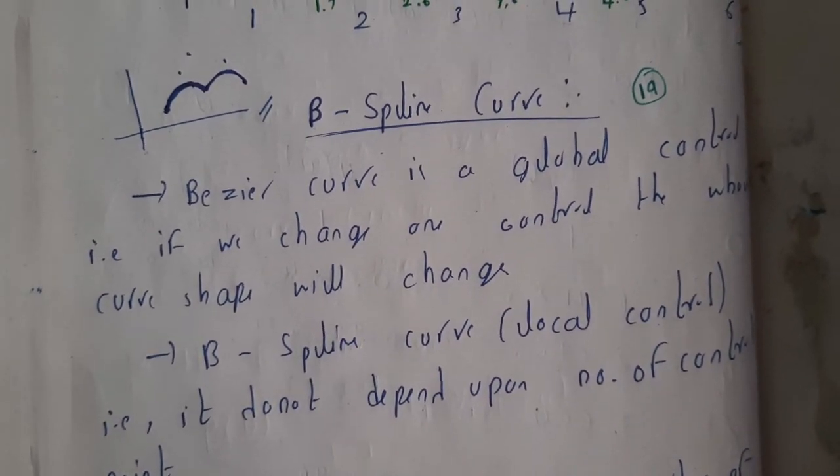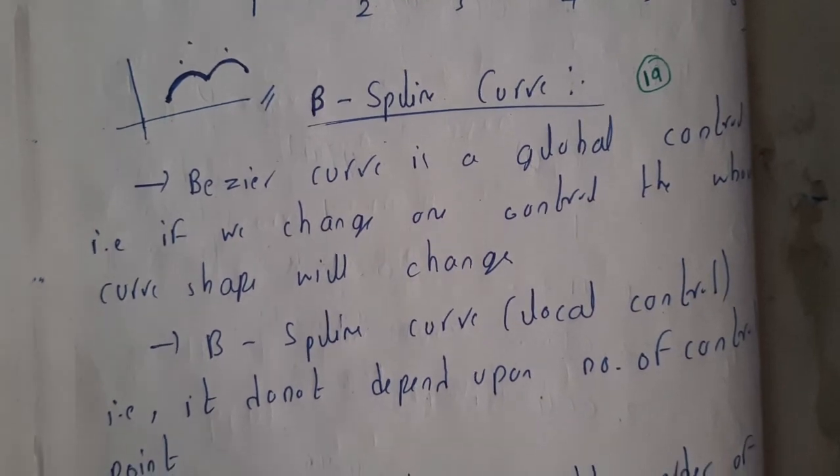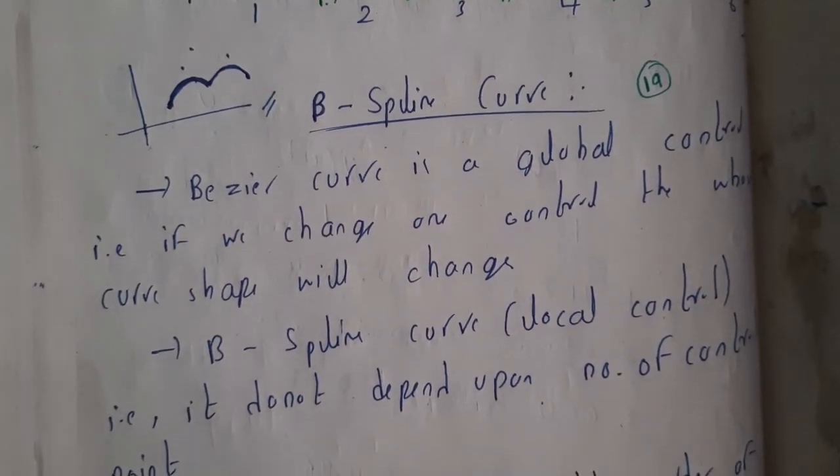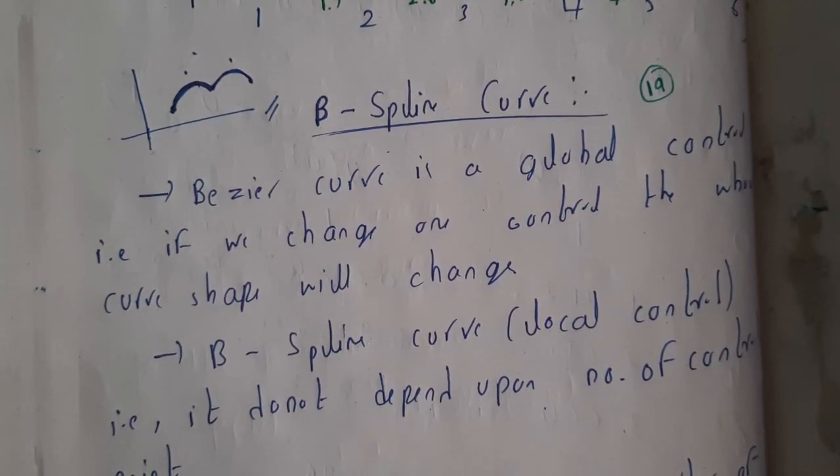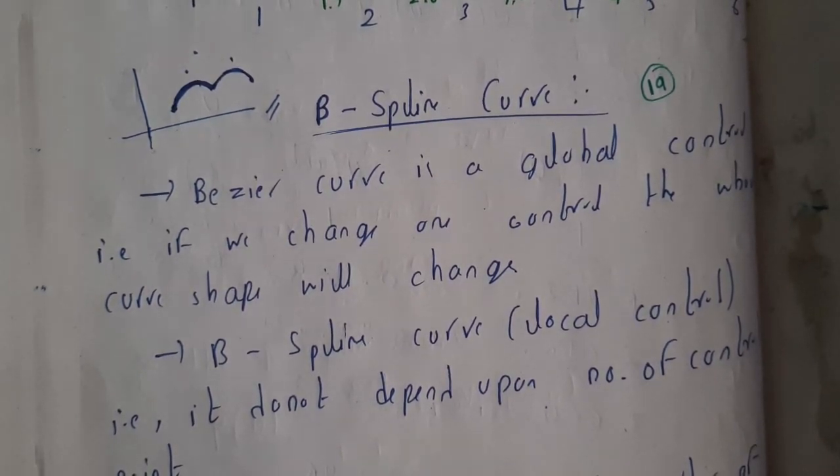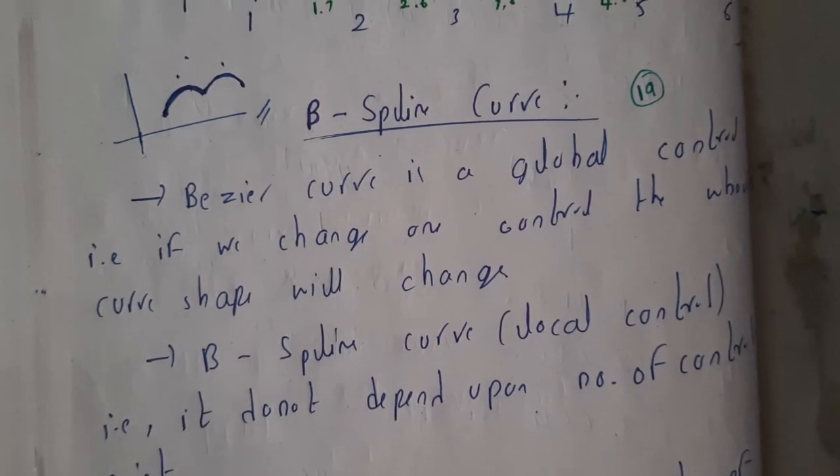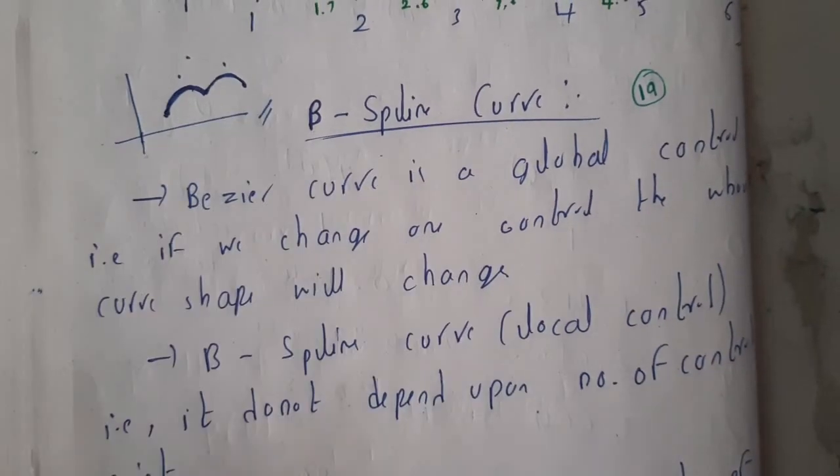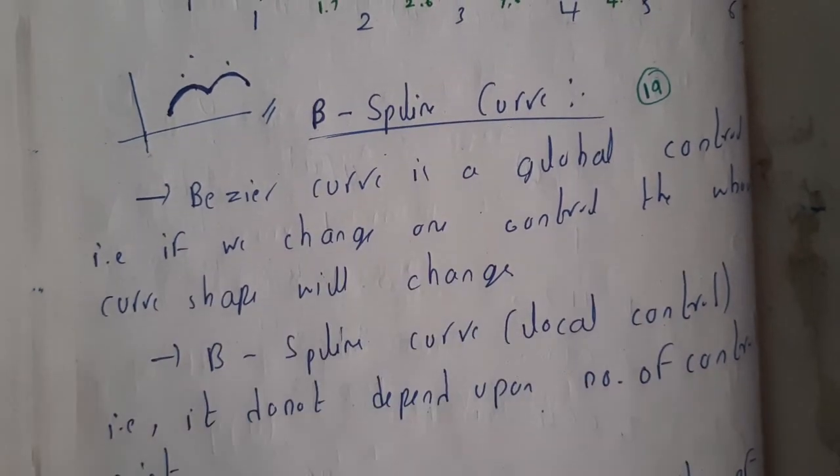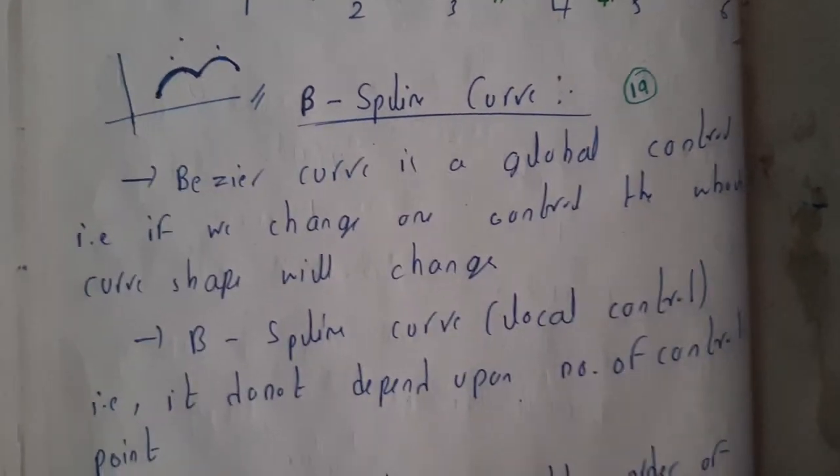In Bezier curves, we have the property called global control. Global control means if you change one control point, the whole curve will change. Whereas B-spline has local control - if you change a particular control point, it affects only a small part of your curve. That is what I have written here.